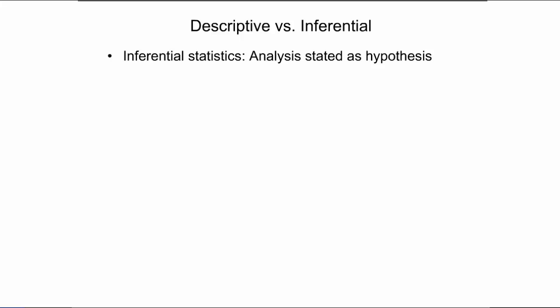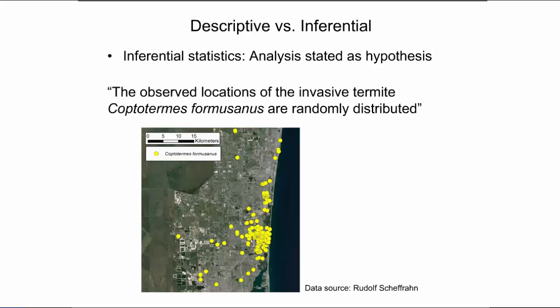As opposed to descriptive statistics, in inferential statistics the analysis is stated as a hypothesis. We ask whether or not a particular set of observations was generated by a hypothesized spatial process. The null hypothesis is therefore that the pattern we are observing has been produced by a particular spatial process. This map shows observed locations of the invasive termite Coptotermes formosanus in southeast Florida. We can, for example, hypothesize that the points are randomly distributed — that they are the result of a spatial process that creates a random point pattern. The observations look clustered, but it is unknown if the clustering is due to chance unless a statistical test is conducted.